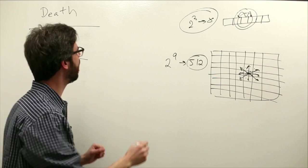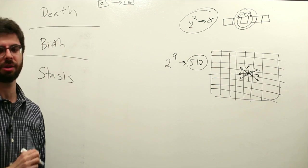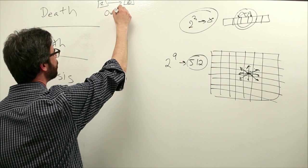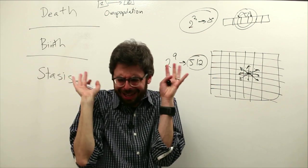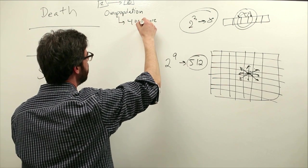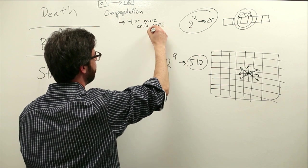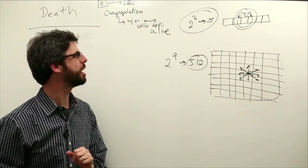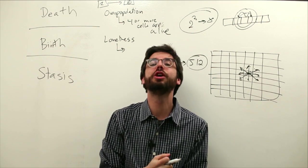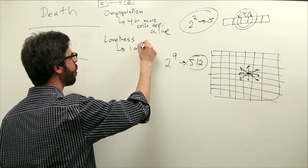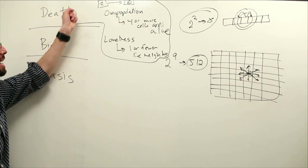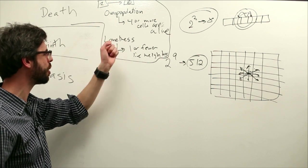So death means we are a cell and our state was one, but in the next generation our state is going to be a zero. When do we die? We die from two possible principles. One is overpopulation. We are crowded, there are lots of cells with a state of one around me. It's too much, I must die. So overpopulation means that four or more cells are alive. Now we also die due to loneliness. We can be very sad and say that we can't stay alive if there's nobody to be our friend around us. So in the case of loneliness that is one or fewer live neighbors.